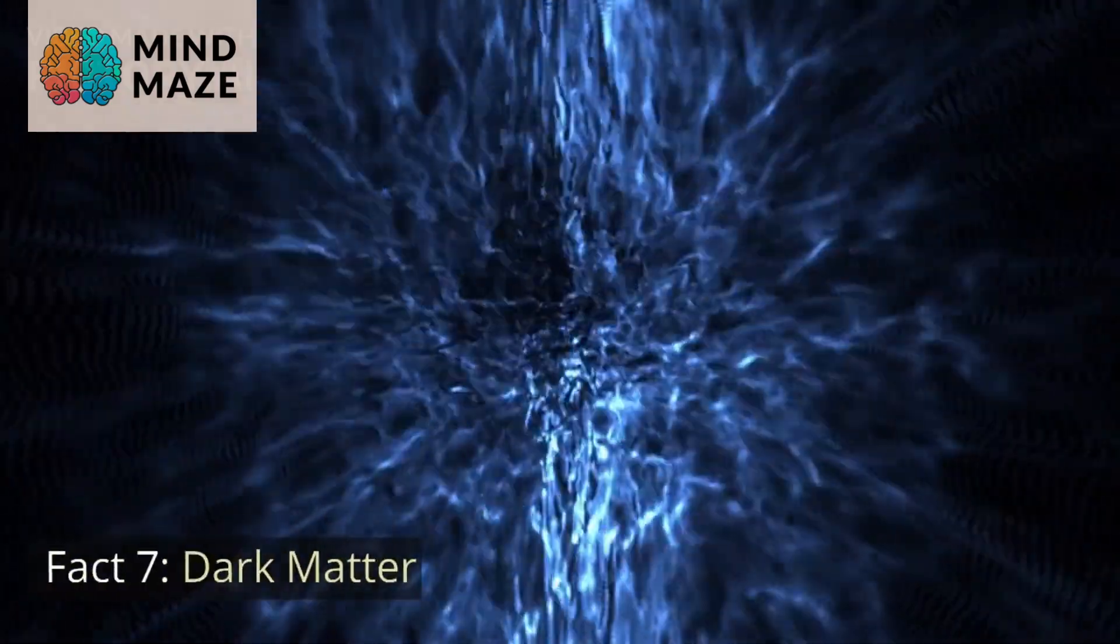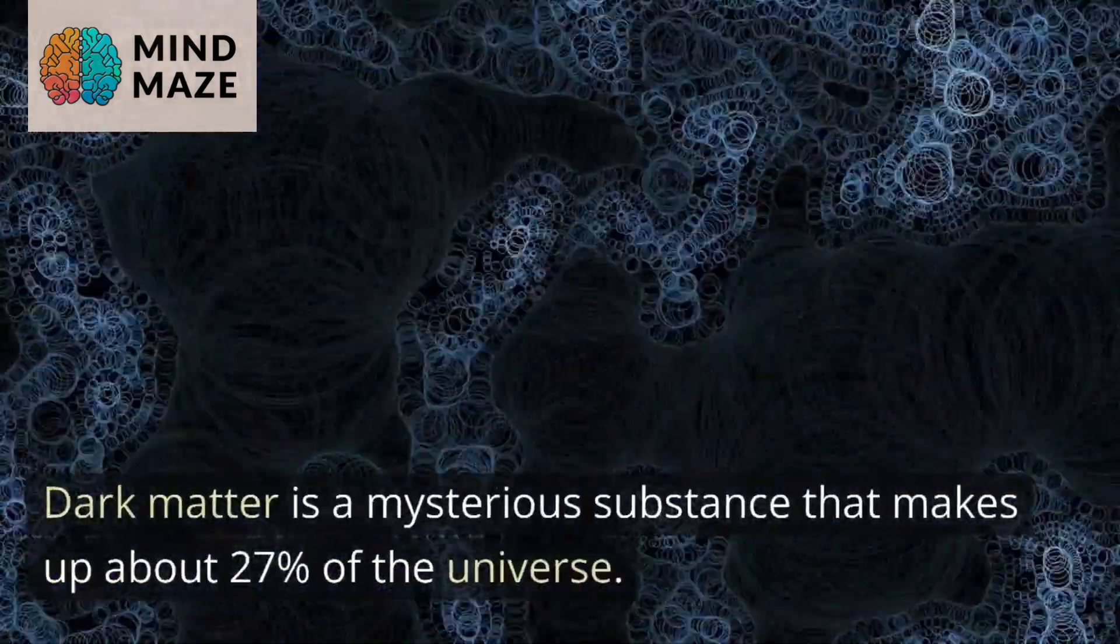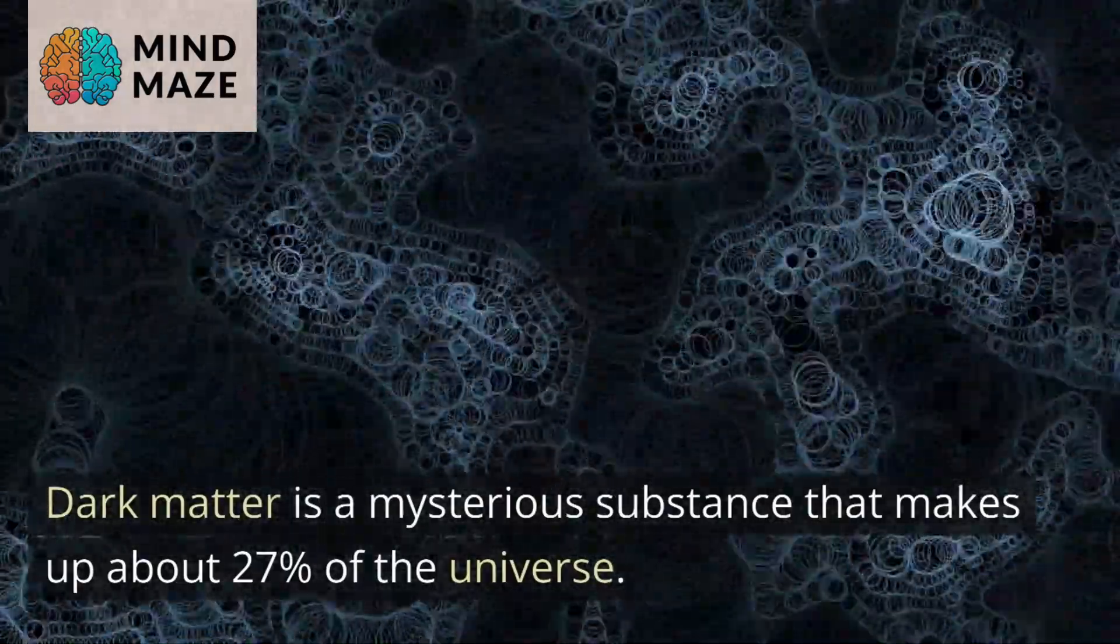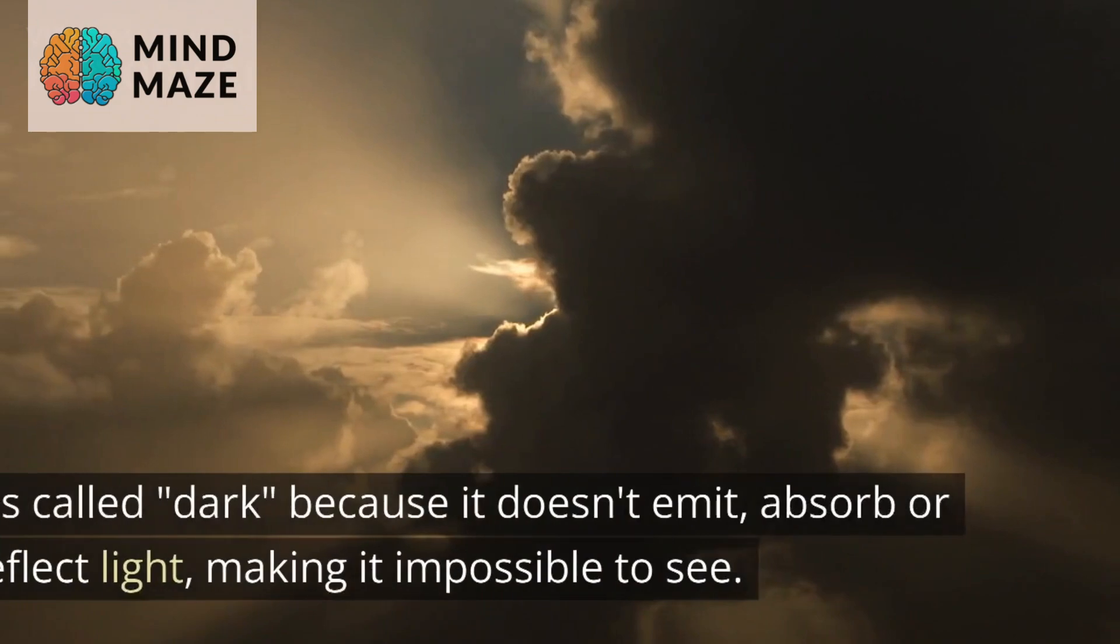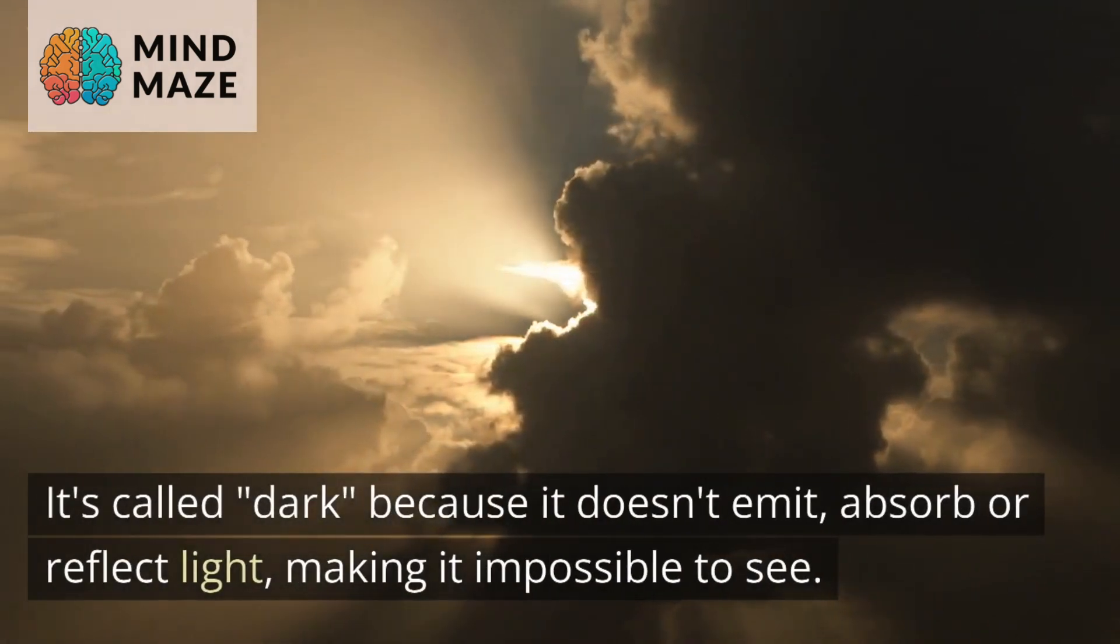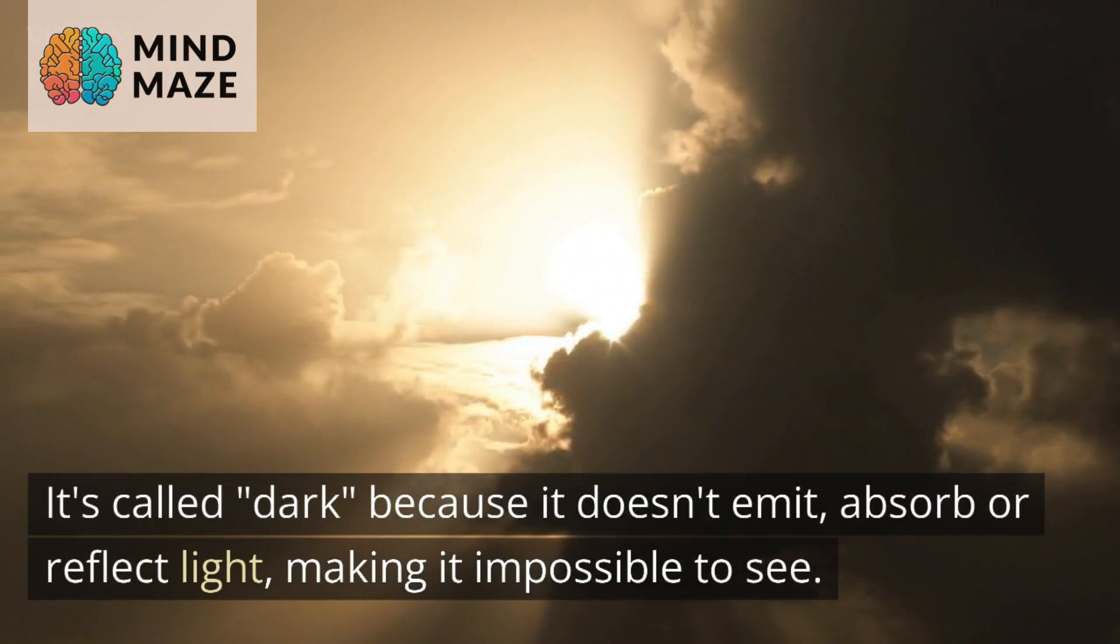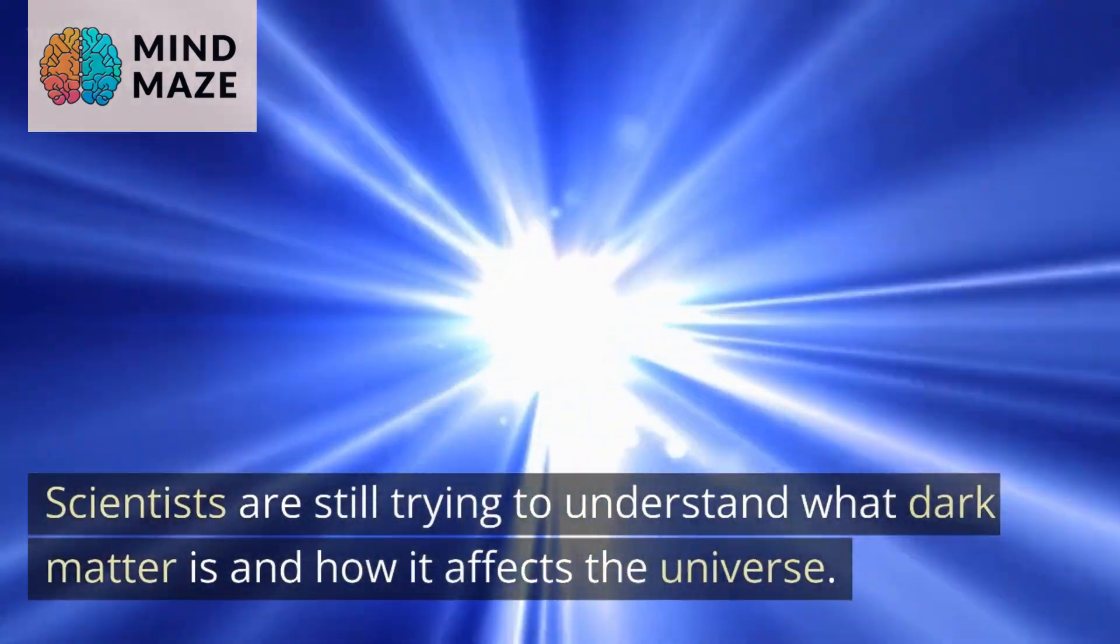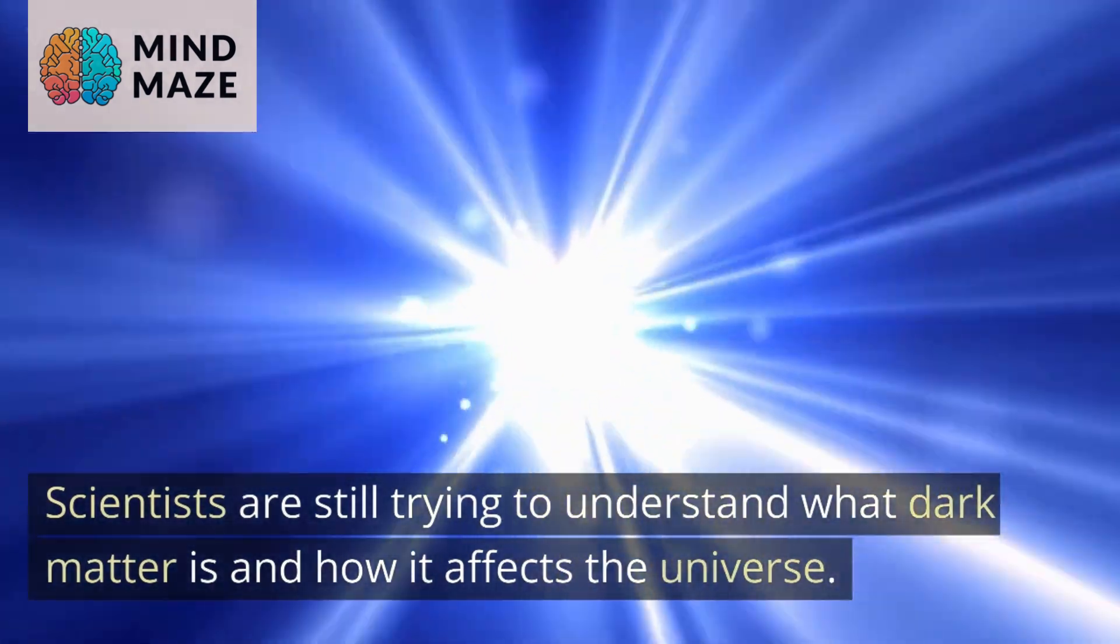Fact seven: Dark matter. Dark matter is a mysterious substance that makes up about 27% of the universe. It's called dark because it doesn't emit, absorb, or reflect light, making it impossible to see. Scientists are still trying to understand what dark matter is and how it affects the universe.